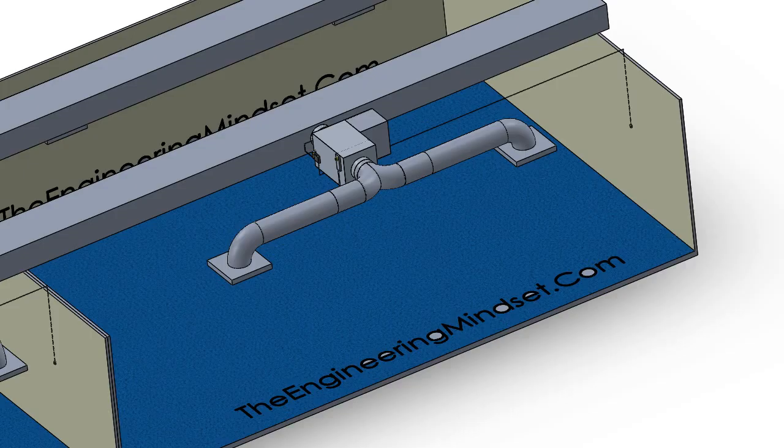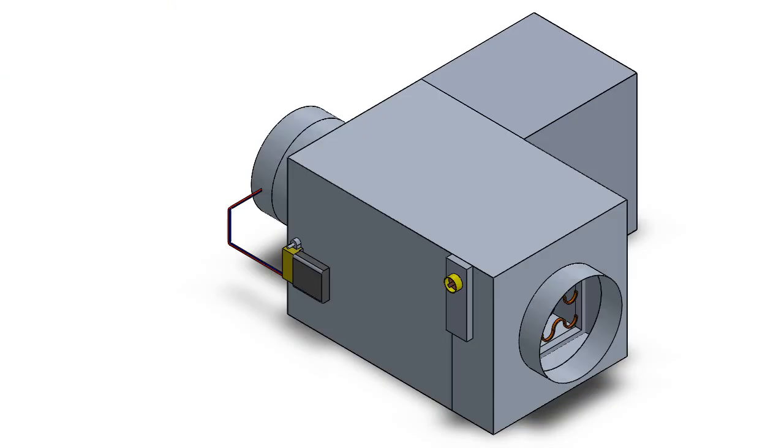You can also get some fan assisted VAV boxes, which you can see this box on the side here. There are a lot of variants you can get on VAV boxes. So this is the most simple version I could make to show you and help you understand this. And I'll just show you inside the model of that as well.